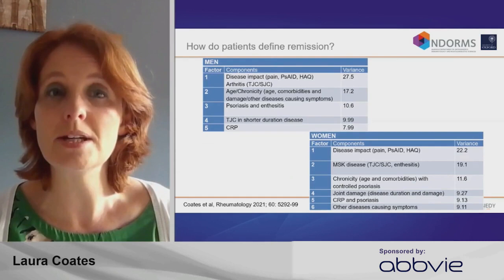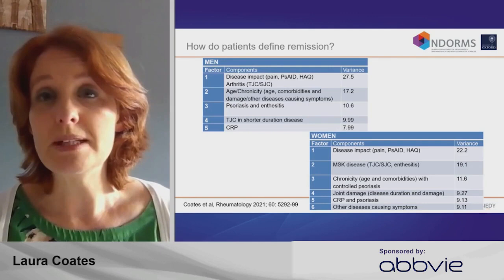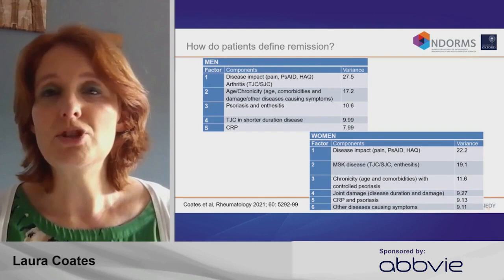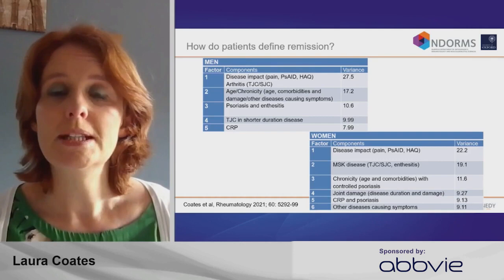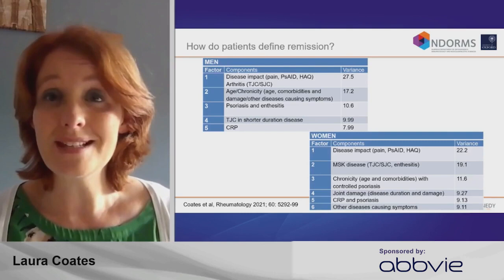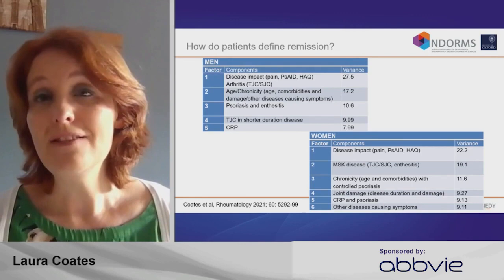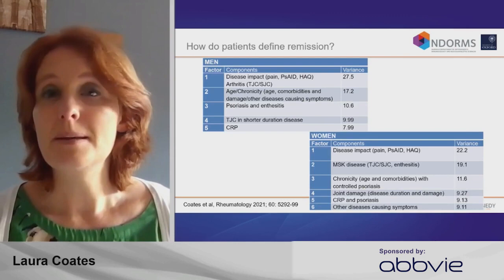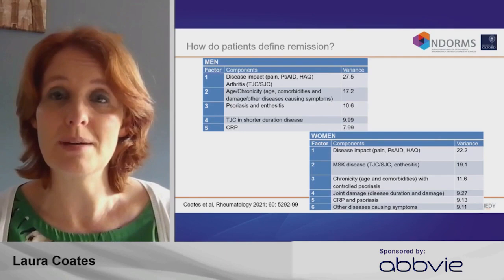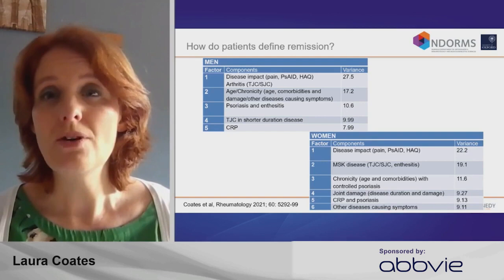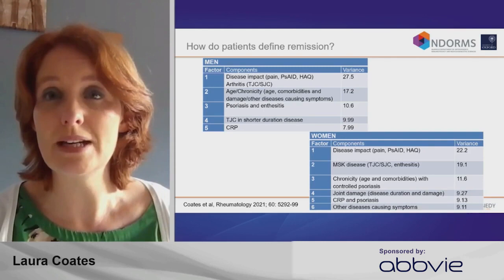This is data from the REFLAP study — a study across multiple countries looking at the definition of remission and low disease activity. We performed a principal component analysis to look at how patients define remission, identifying those who felt their disease was as good as gone. You can see many things come into it: joint counts, psoriasis scores, age, CRP. But by far the biggest influencer is disease impact — it's pain, the PSAID questionnaire, the impact of disease questionnaire, and the HAQ, which is a measure of functional ability. So to patients, remission is much more about what they can do, not necessarily about inflammation in the joints.